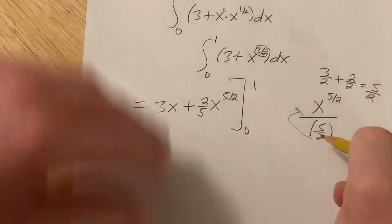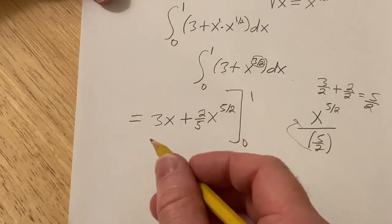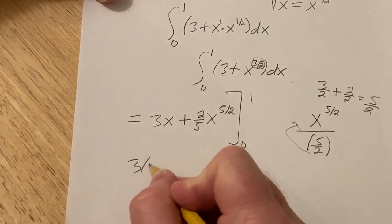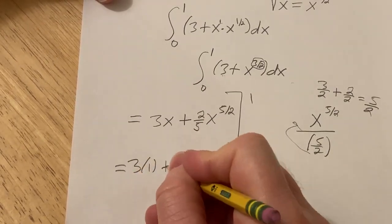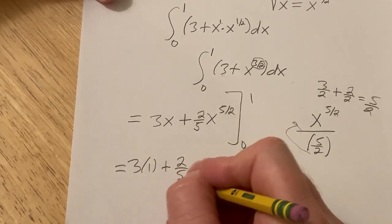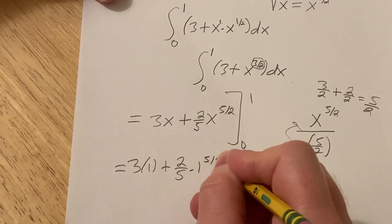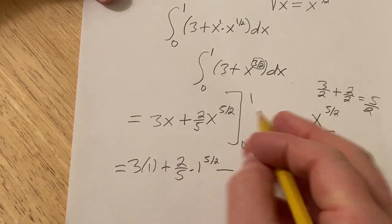The rule says that you plug in the 1 first. So this is going to be 3 times 1 plus 2/5 times 1 to the 5/2, then you subtract and plug in 0. But when you plug in 0 for these, you're just going to get 0.